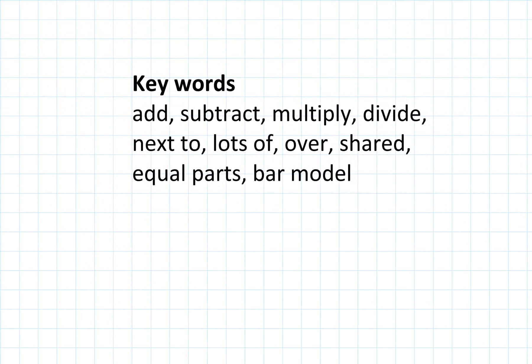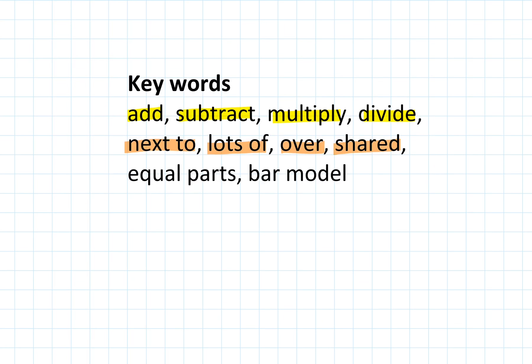You might find the following keywords helpful when you are solving problems in R1. You will have to use the 4 operations: add, subtract, multiply and divide. You can also use other words when you are describing the mistakes or when you are describing the correct solution. You can say next to, lots of, over and shared when you are talking about multiplication and division. It is also important that you point out if something has to be equal parts.